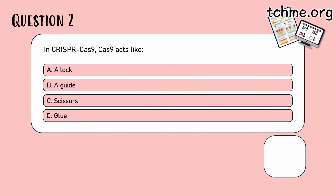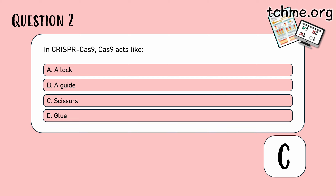In CRISPR-Cas9, Cas9 acts like scissors — it does the cutting. Remember, the guide RNA was like the brain, and the PAM sequence was like the fingers that actually activate the cutting. So for this question, the answer is C — Cas9 acts as the endonuclease that cuts the DNA.